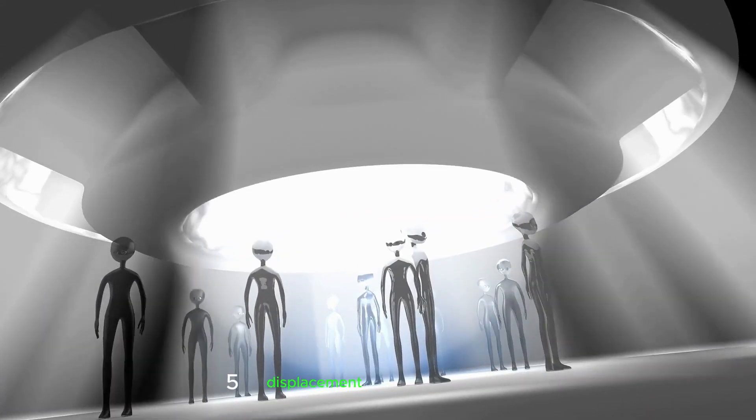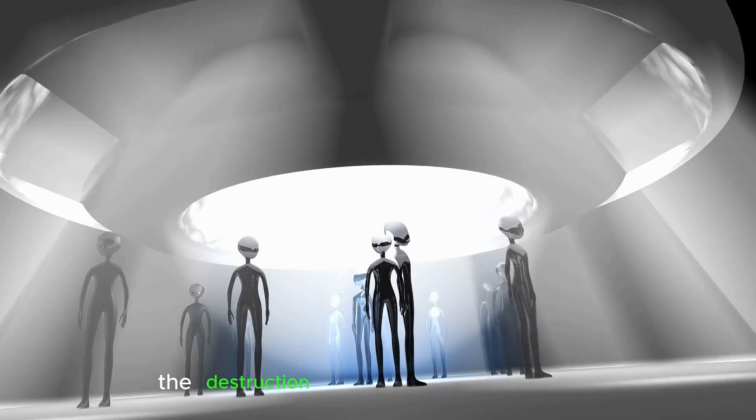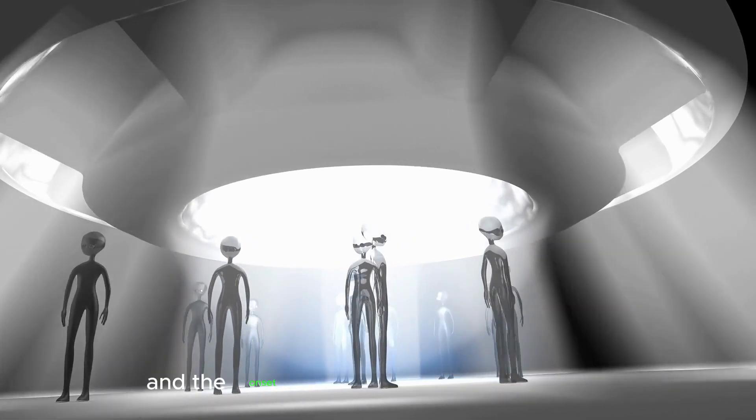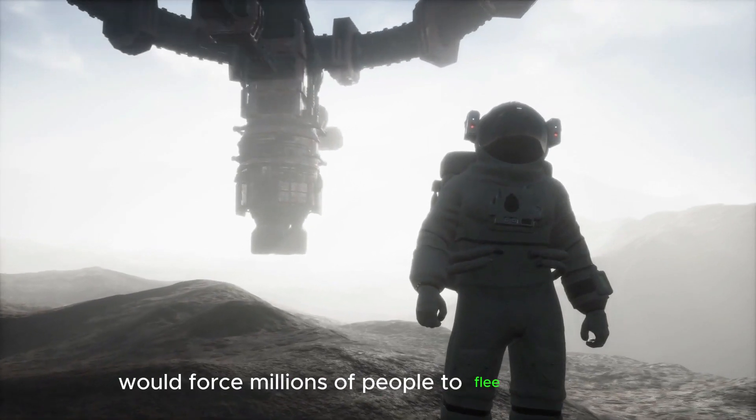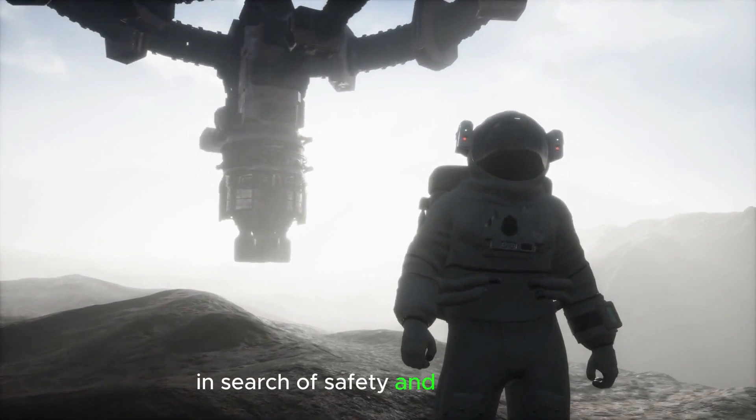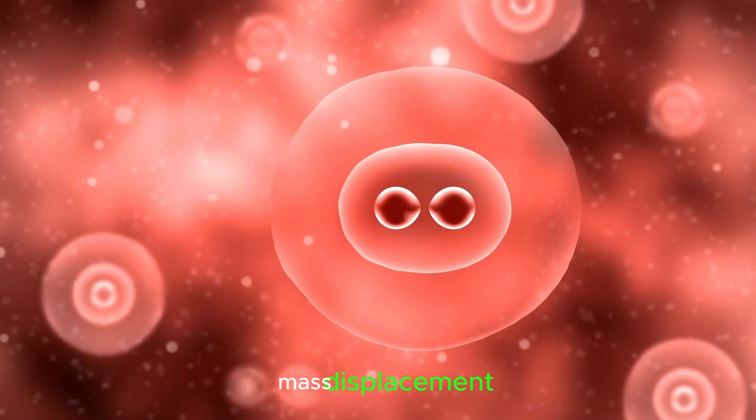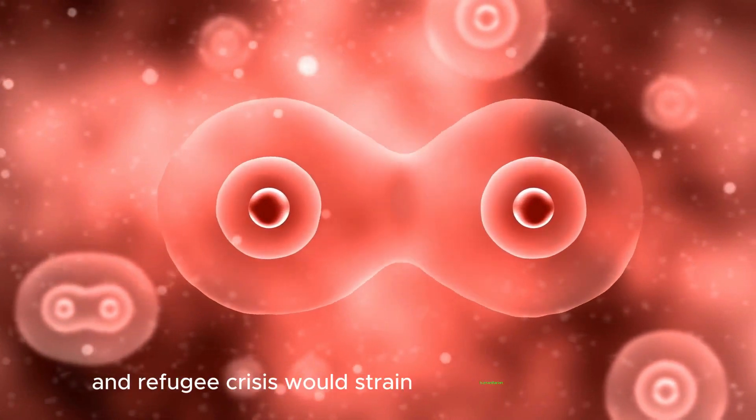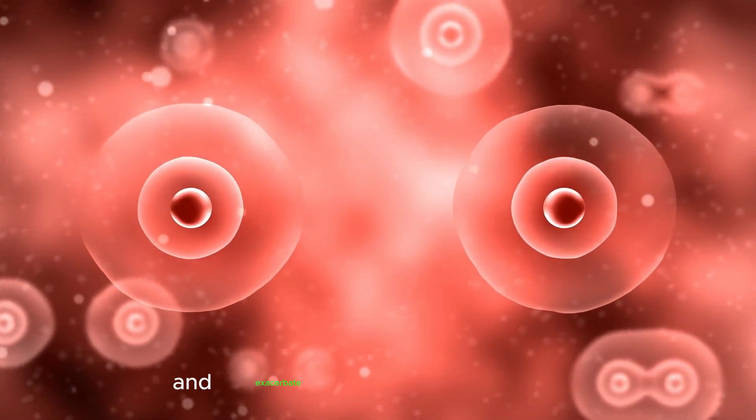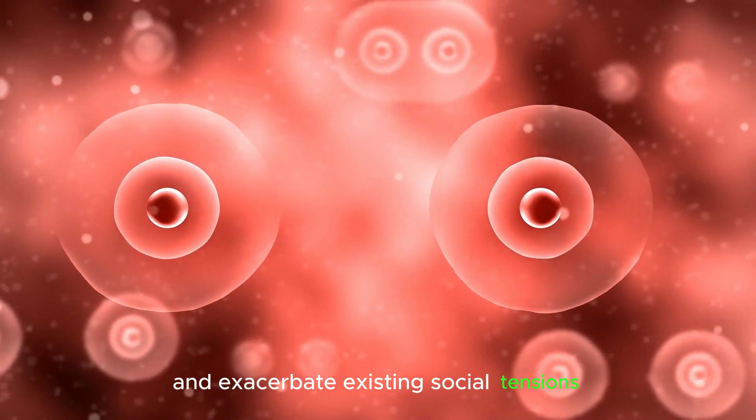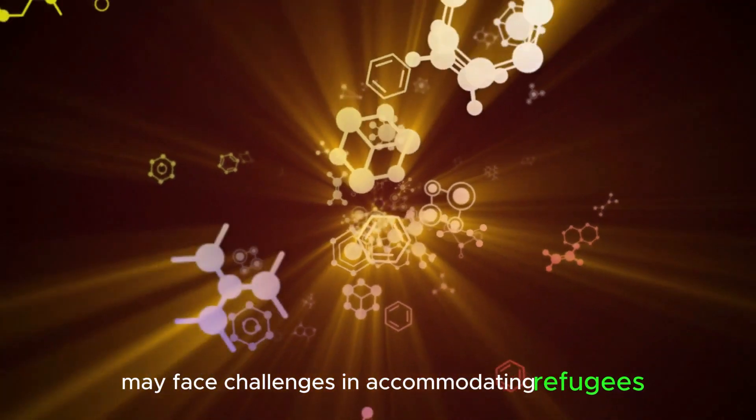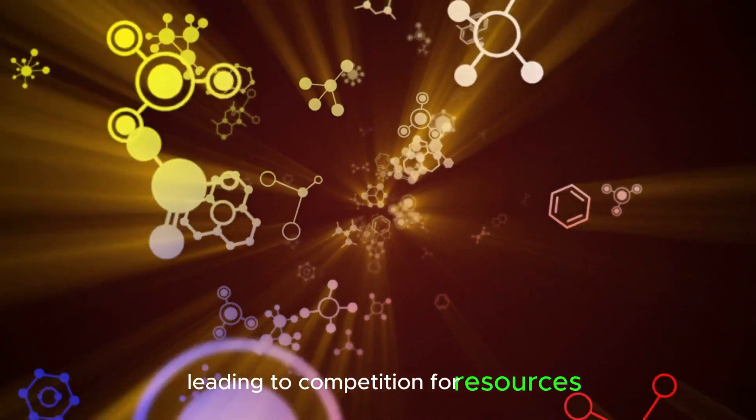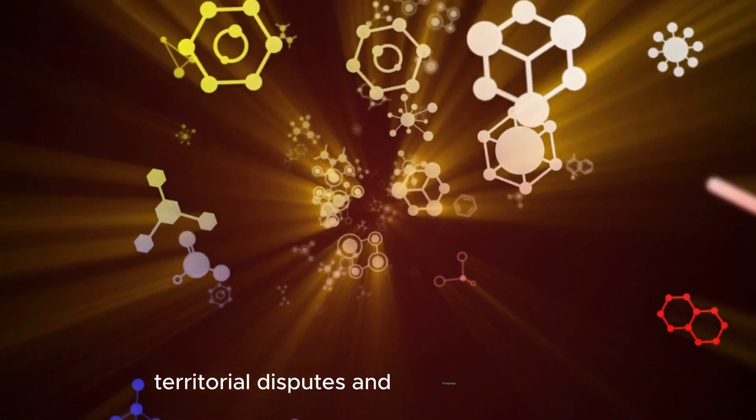Displacement and refugees: The destruction of habitable environments and the onset of environmental degradation would force millions of people to flee their homes in search of safety and sustenance. Mass displacement and refugee crises would strain humanitarian resources and exacerbate existing social tensions. Host communities may face challenges in accommodating refugees, leading to competition for resources, territorial disputes, and intergroup conflicts.